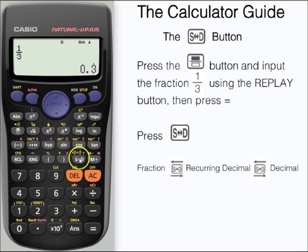We can press the S⇔D button again to get the full calculated display of this. And then once more we can change back to the exact answer of 1/3.